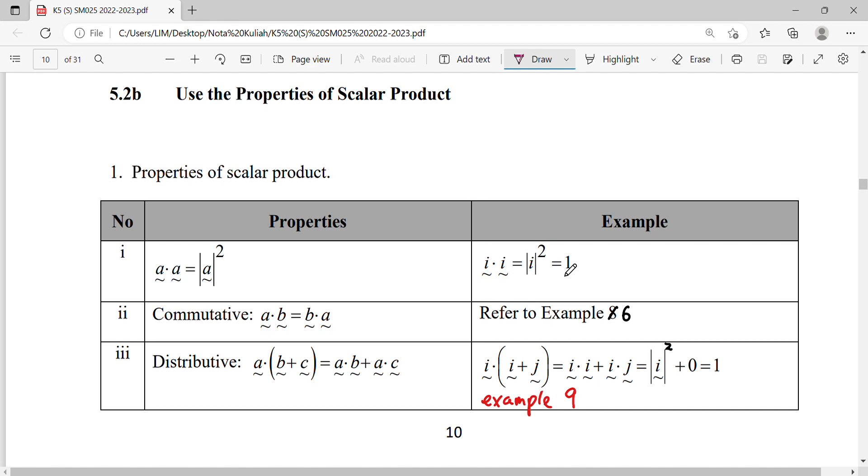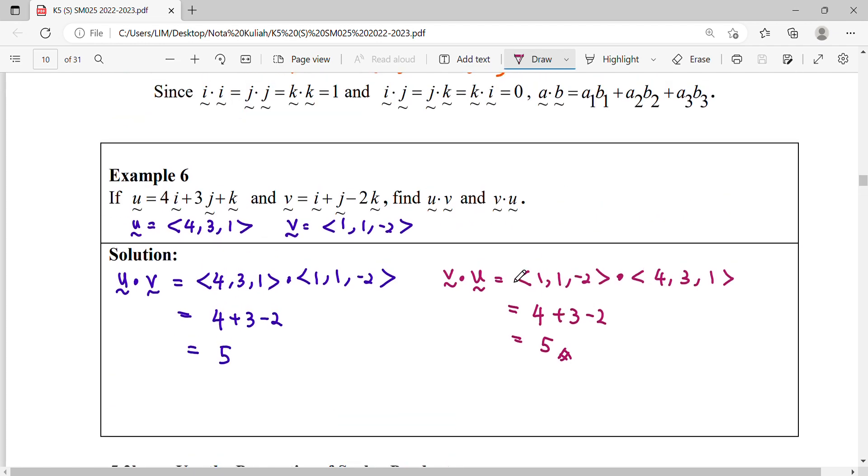The unit of I vector is 1. So property number 2 is commutative law. Commutative law says that A dot B will be equal to B dot A. So this one we can refer to Example 6. Look at our Example 6 that we did before.